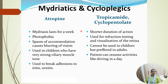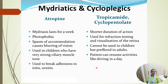Summary of mydriatics: atropine — mydriasis lasts a week, causes photophobia and blurring of vision due to spasm of accommodation; it is used in children with strong ciliary muscle tone and to break adhesions in iritis and uveitis. Tropicamide and cyclopentolate have shorter duration and are used for refraction testing and visualization of the retina; they cannot be used in children but are preferred in adults, who can resume activities like driving within a day.